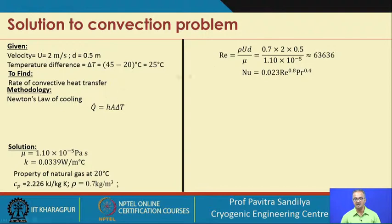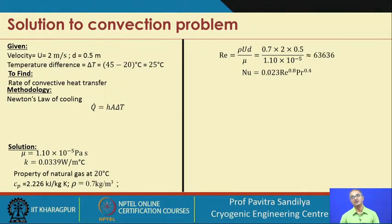The Reynolds number comes out to be 63,636. This is a very high Reynolds number — much greater than 2000, which is the critical Reynolds number for a circular tube marking turbulent flow. So we are in the turbulent regime, and we use the Dittus-Boelter equation.